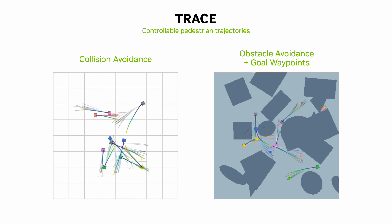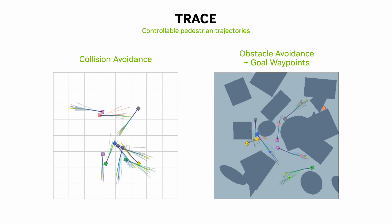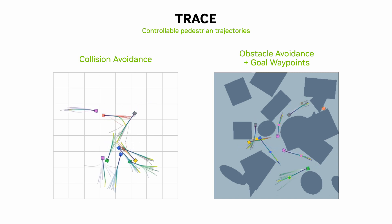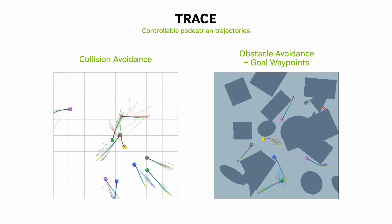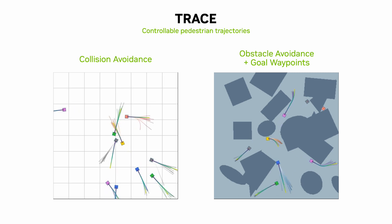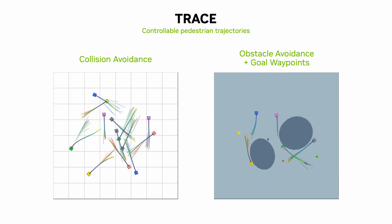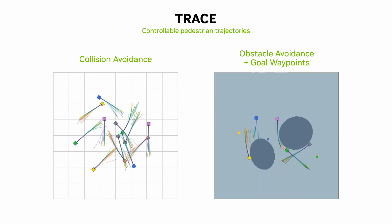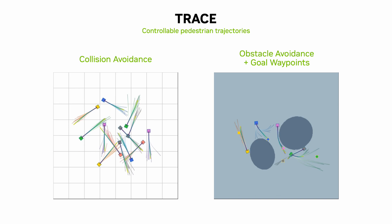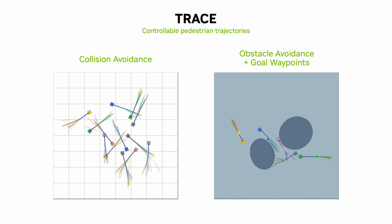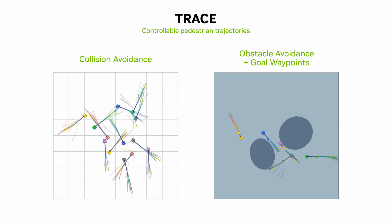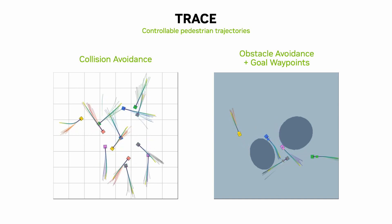As a standalone planner, Trace can generate realistic trajectories that follow several user controls. For example, here on the left, guidance is used to avoid collisions between agents, and on the right, obstacle avoidance is achieved while going to specific target locations.